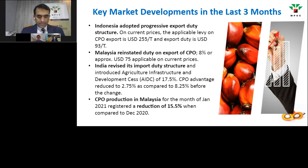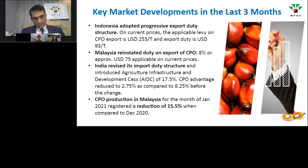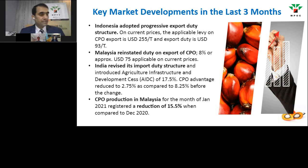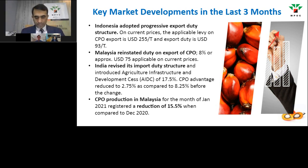Let's look at the key market developments in the last three months which have had an immediate impact on trade or are likely to have an impact in the coming months. The most important development is a change in duties and tariffs in exporting countries. On December 10th, Indonesia adopted a progressive export duty structure to support their B30 biofuel program. At current prices, the applicable levy on CPO export is USD $255 per ton and export duty is $93 per ton, totaling approximately USD $348 per ton. A new base rate for April duty structure is also to be announced soon by Indonesian authorities.